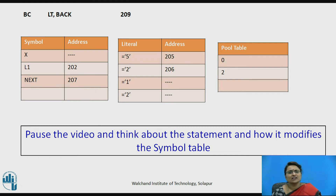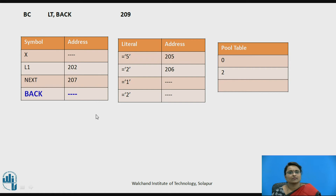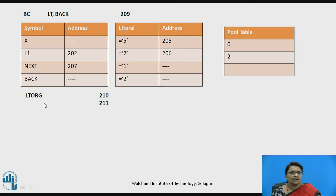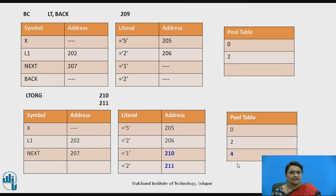Pause the video and think about how the next statement modifies the symbol table. The statement makes an entry for symbol BACK, with the address currently unknown. The next statement is LTORG again — literal's origin. It takes the next pool starting at position 2 and allocates memory at location counter values 210 and 211. Those addresses are written into the literal table, and the current pool is updated to start with the fourth literal entry as the next pool entry.